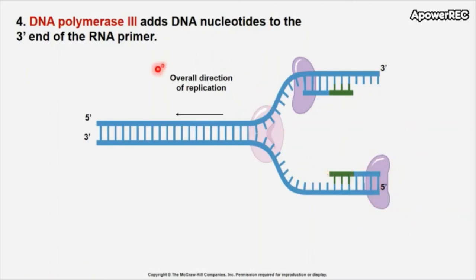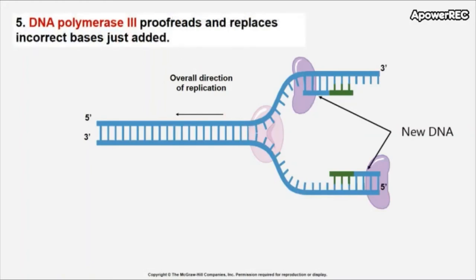There's something interesting going on with the bottom strand: DNA polymerase 3 attaches to the primer but has to move away from the overall direction of replication because it must read 3-prime to 5-prime — so it goes in the 'wrong' direction relative to the replication fork. Also noteworthy: DNA polymerase 3 proofreads and replaces incorrect bases just added, so if it makes a mistake it has the capability of catching and repairing that mistake.